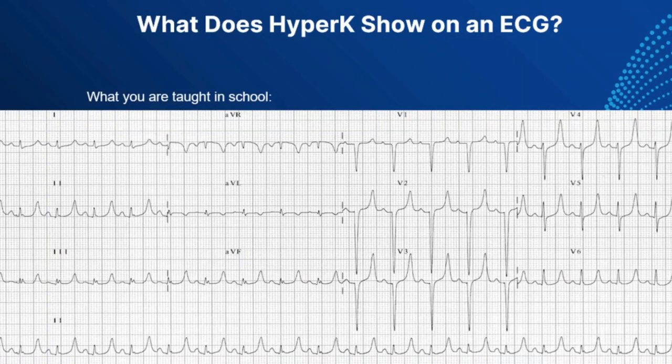What does hyperkalemia show on an ECG? When you go through school, you're taught about peaked T-waves and that's about it. But there's so much more to it. Basically, what hyperkalemia does is widen everything out until you reach the very stable rhythm of asystole. Let me show you a graph on the next slide to show how hyperkalemia progresses.